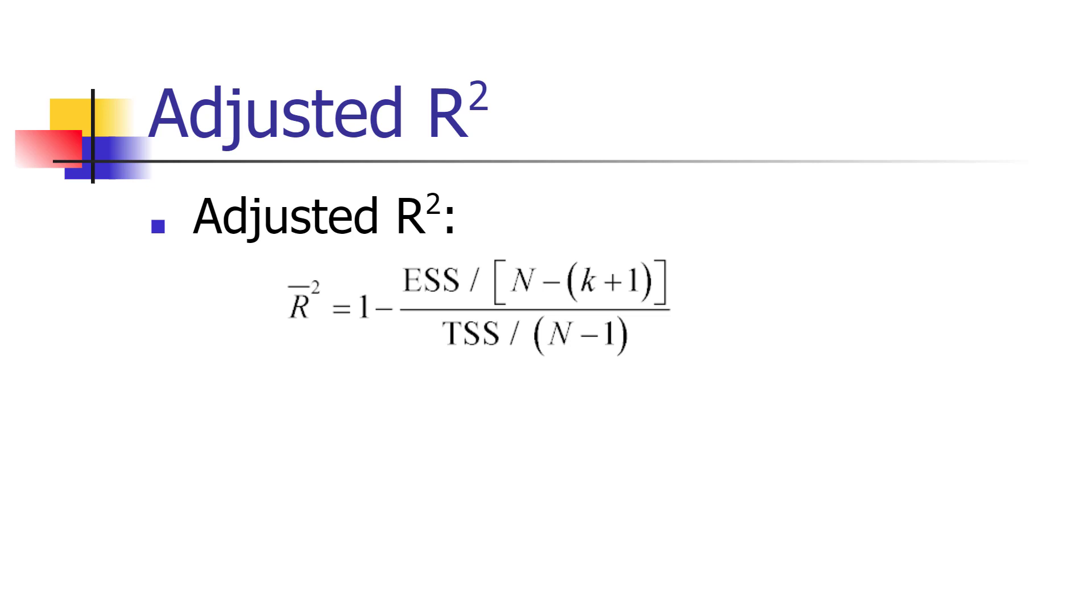It is defined not as 1 minus ESS over TSS as the standard R-squared is measured, but you divide ESS and TSS respectively by the respective degrees of freedom for those two terms.